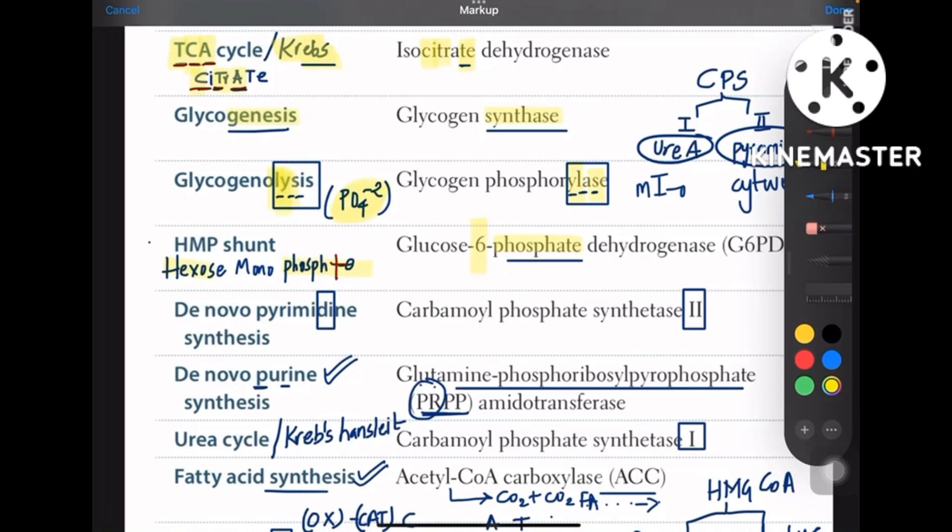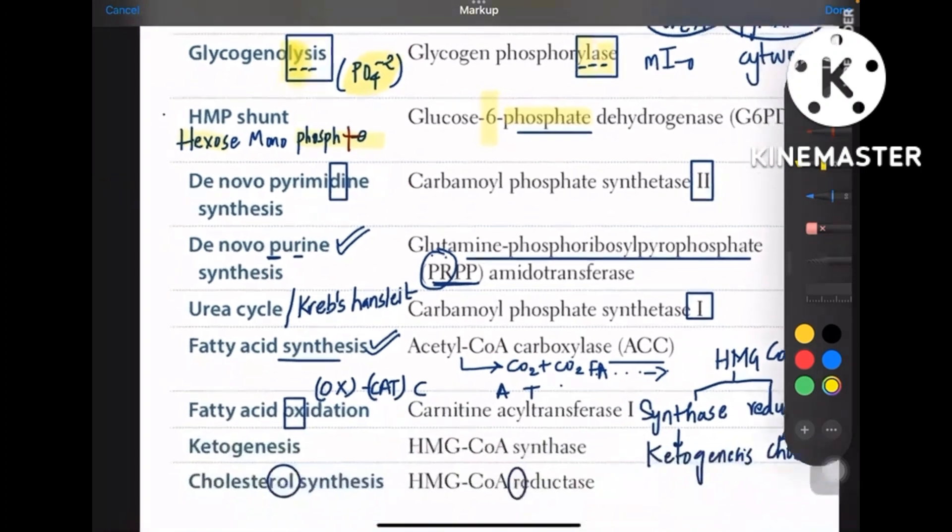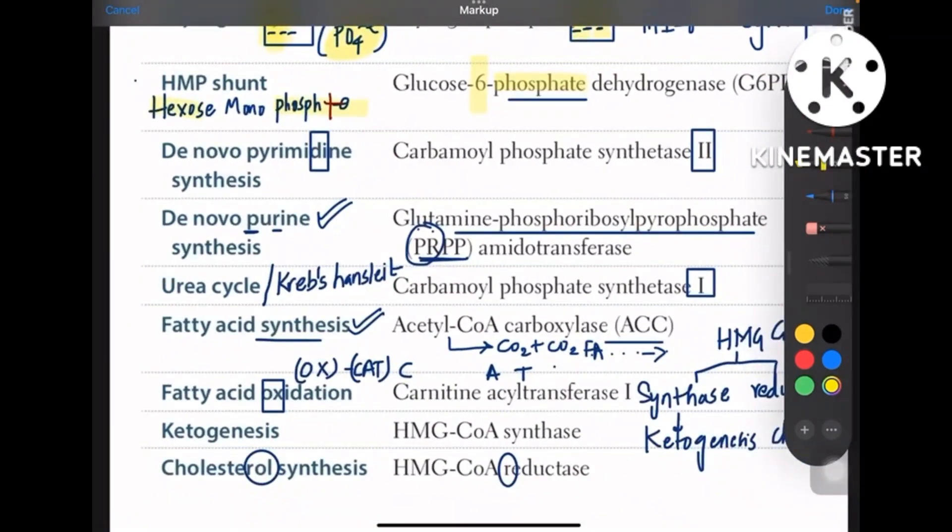Coming to de novo pyrimidine synthesis, you have to learn de novo pyrimidine synthesis along with urea cycle guys, because both of them have carbamoyl phosphate synthase in their enzyme names.